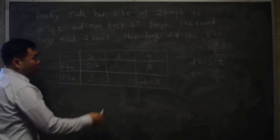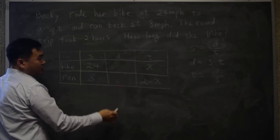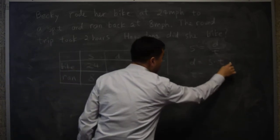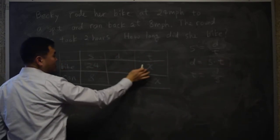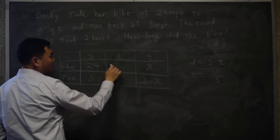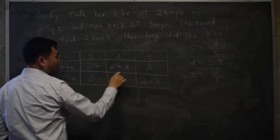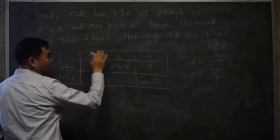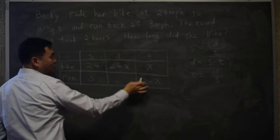And here, because the empty spots are the distances, let's use this, which means you simply multiply these and you get to fill these missing parts. So it's 24x. Distance is speed times time, so it's 8 times 2 minus x.